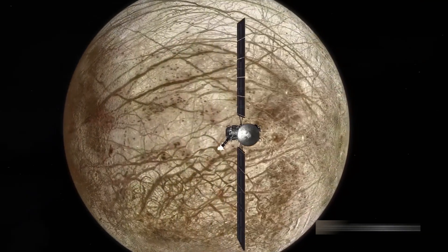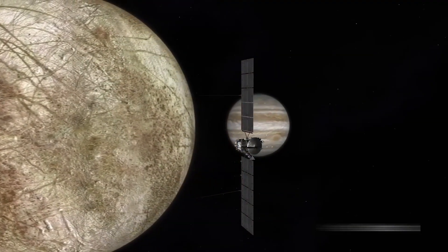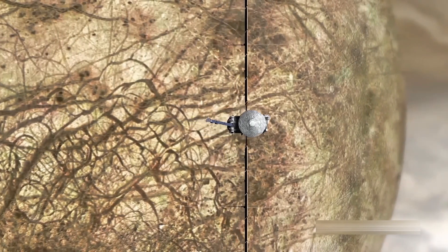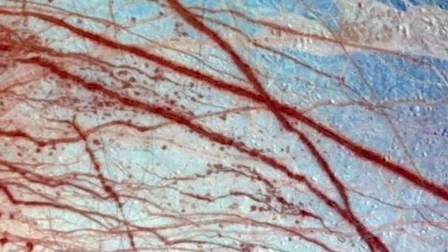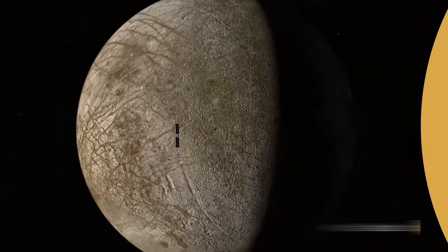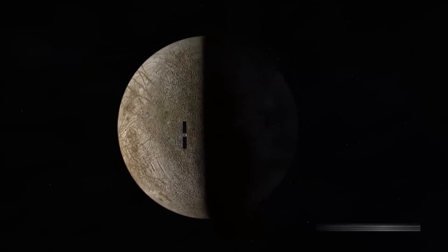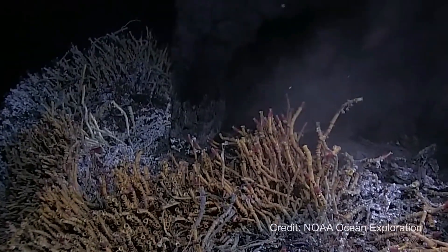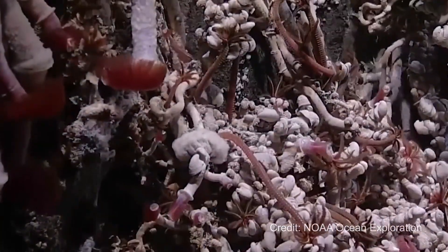Then came Europa, a quieter sibling, but no less intriguing. Its surface was smooth and ghostly, crisscrossed with long, dark lines cracked in a frozen lake. Beneath that icy crust, Voyager's data hinted at something astonishing. A vast subsurface ocean. An ocean that might, even now, be harboring life in a lightless alien sea.